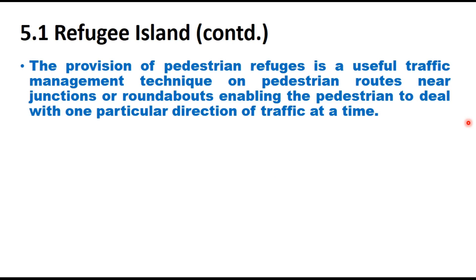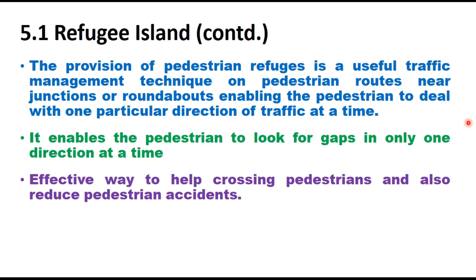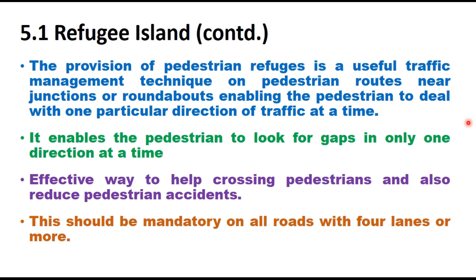The provision of pedestrian refuges is a useful traffic placement technique on pedestrian routes near junctions or roundabouts, enabling pedestrians to deal with one direction of traffic at a time. When the street is wide, a pedestrian cannot cross the entire street in one go and will cross in two stages, using the refuge island to rest in between. This enables the pedestrian to look for gaps in only one direction at a time, and is an effective way to reduce pedestrian accidents. This should be made mandatory on all roads with four lanes or more.